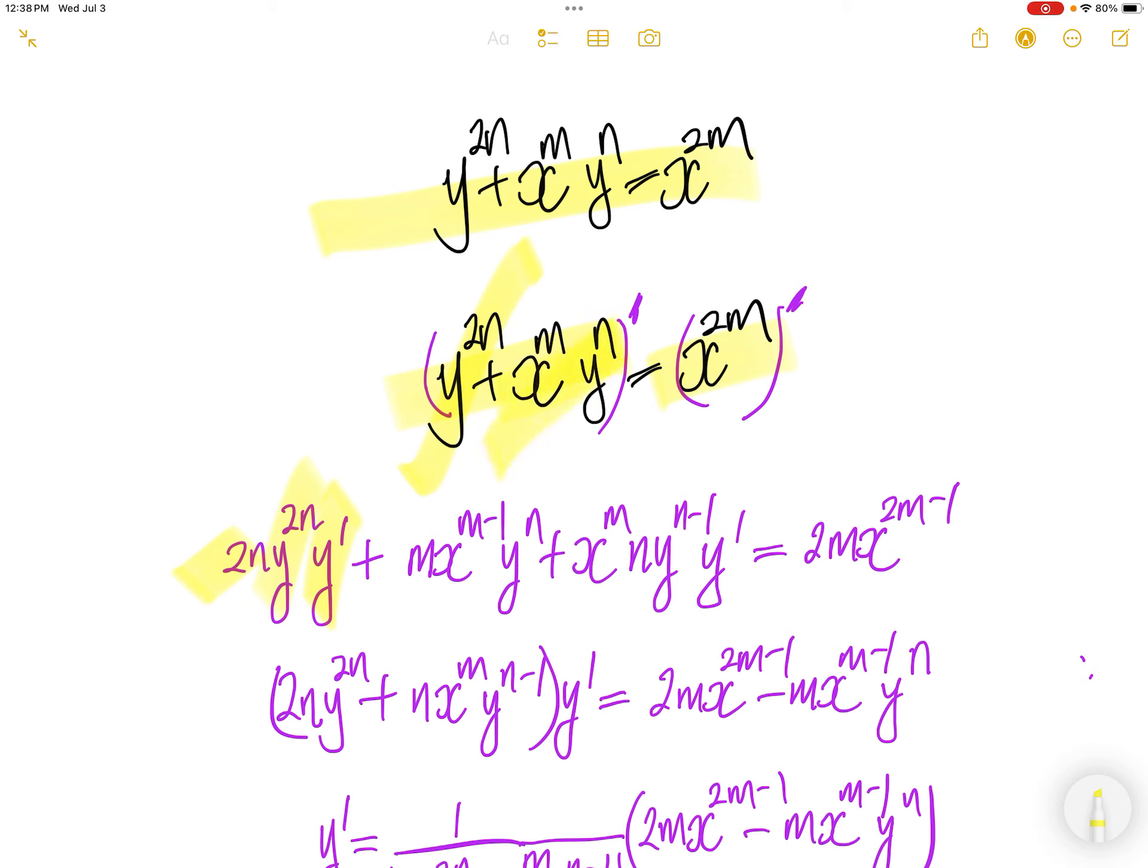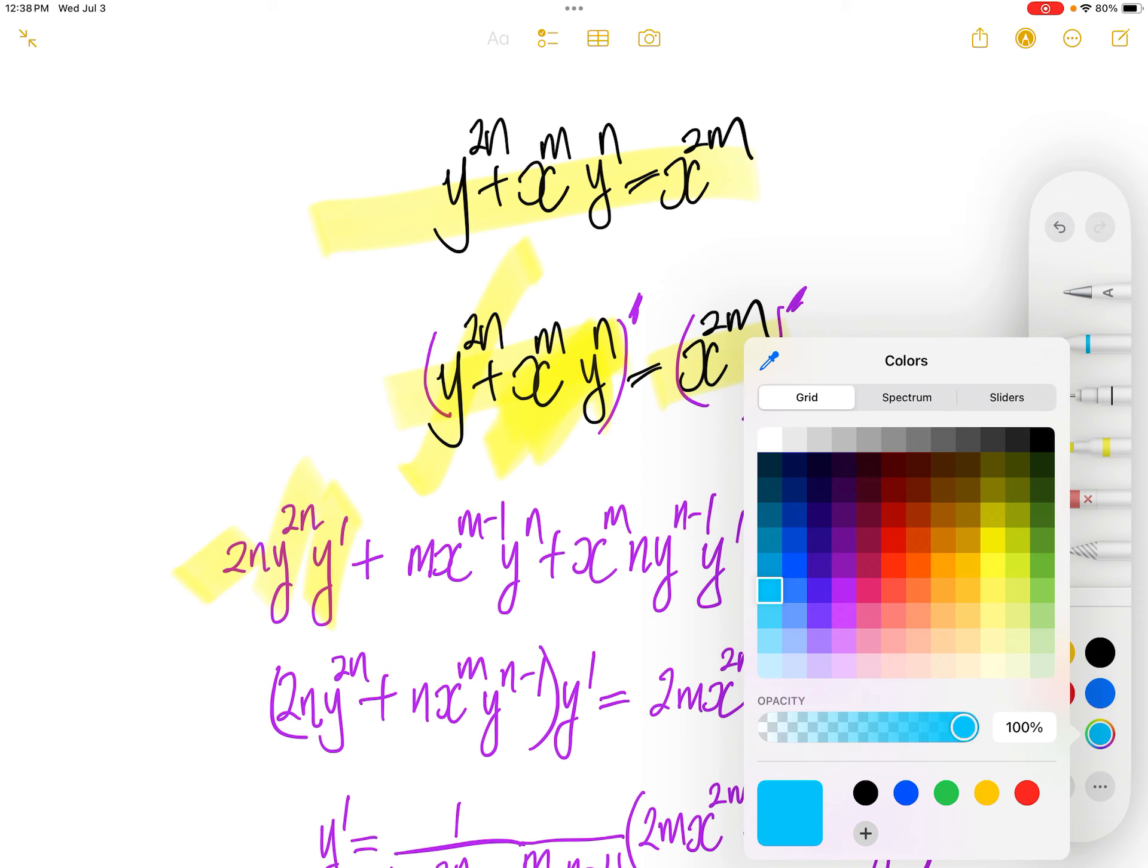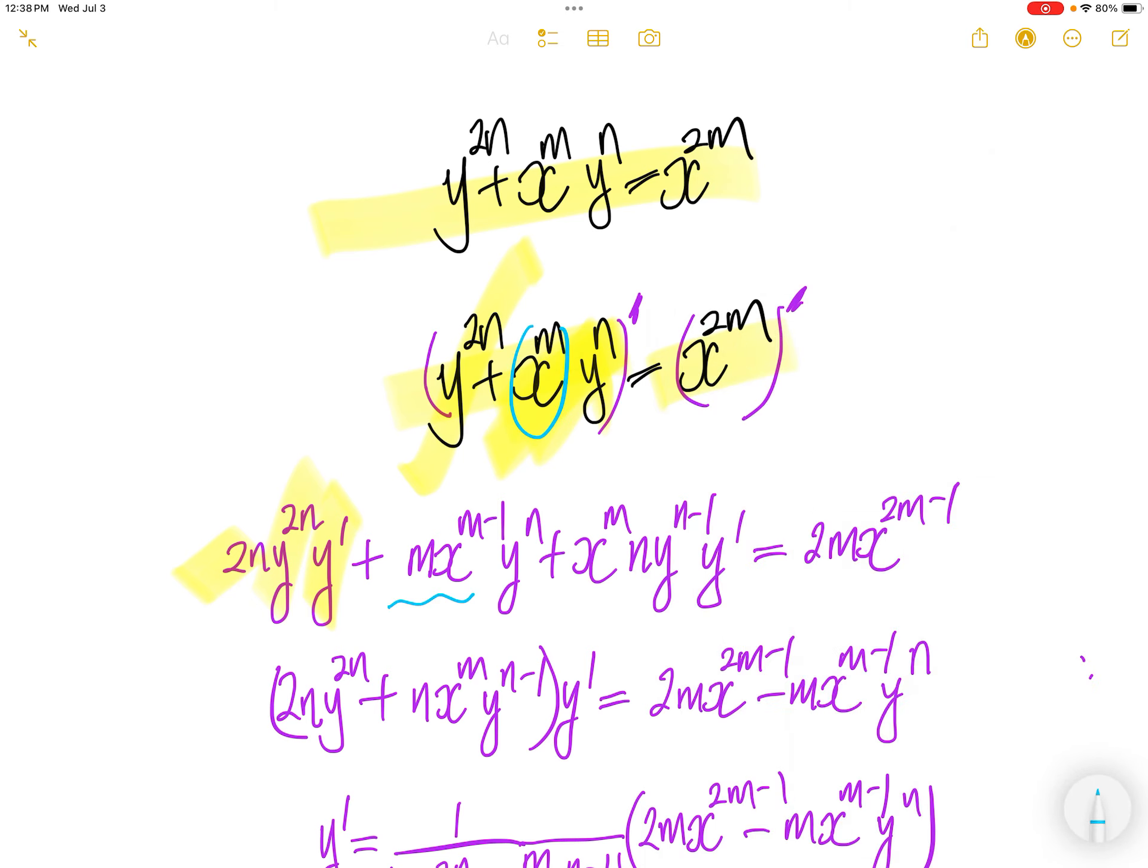Now let's take the derivative on the second term. This is the product of two functions. The derivative of this is that, times the second function, plus the first function, times the derivative of the second function, which is that.